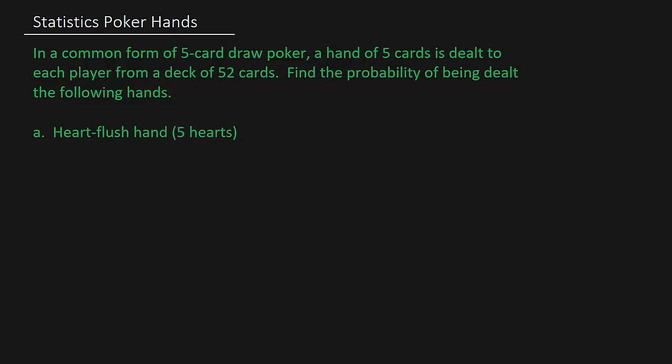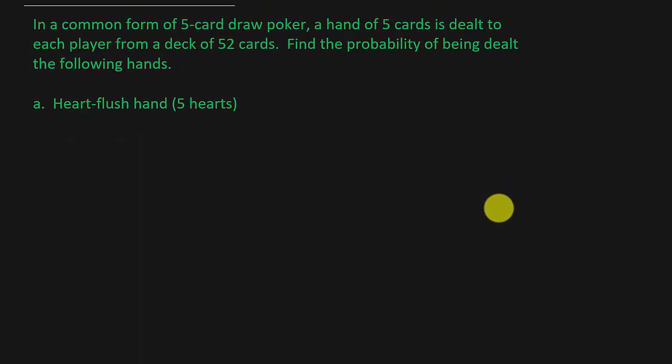So we want to know the probability of getting a heart flush. That means we're going to have five hearts. It doesn't matter what numbers you have — you just need five hearts. You can have a 2, king, 10, 9, and a 4. They just all have to be hearts. Probability is the number of successful outcomes divided by the number of possible outcomes. So let's find the possible outcomes — how many different possible hands are there in a five card draw poker?